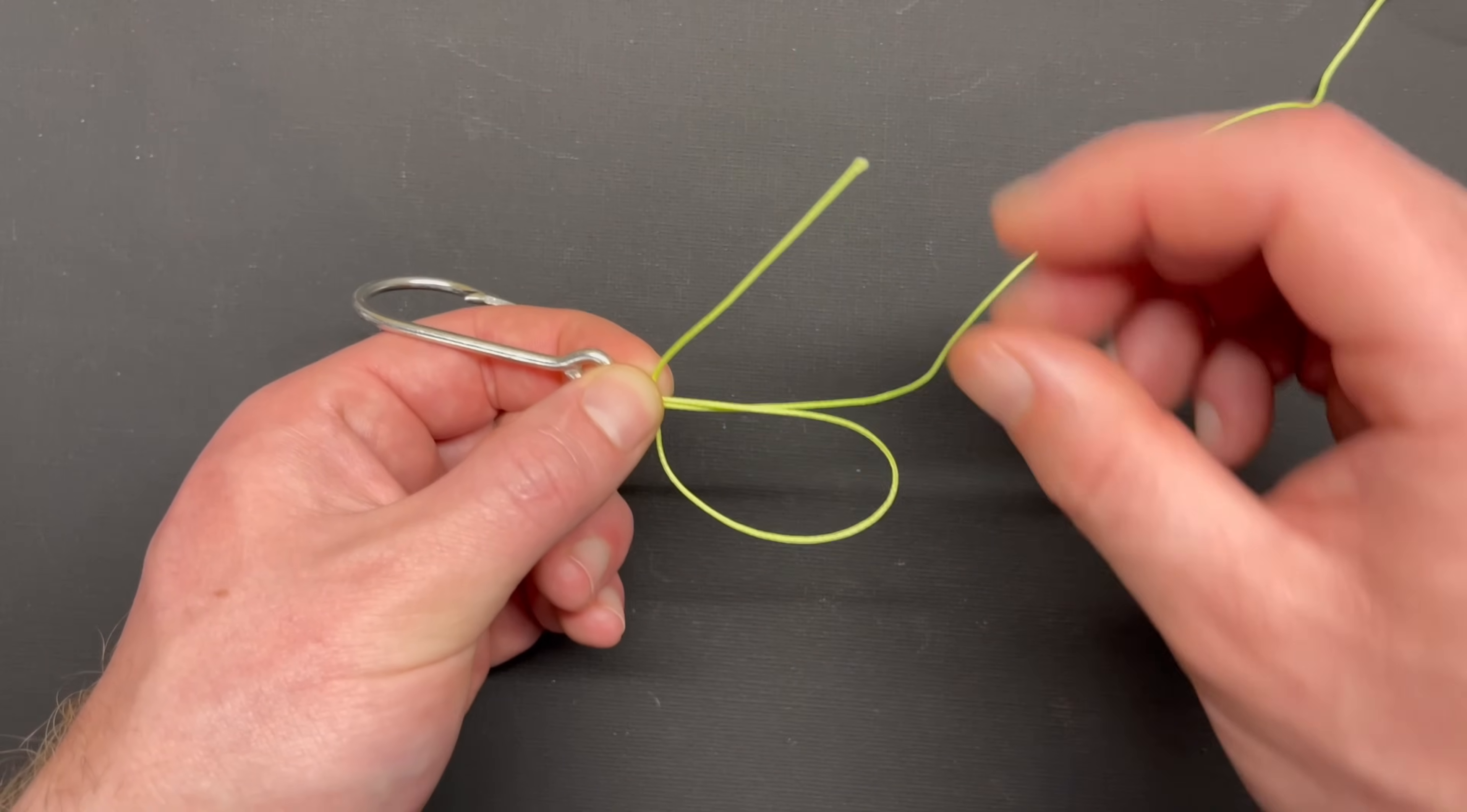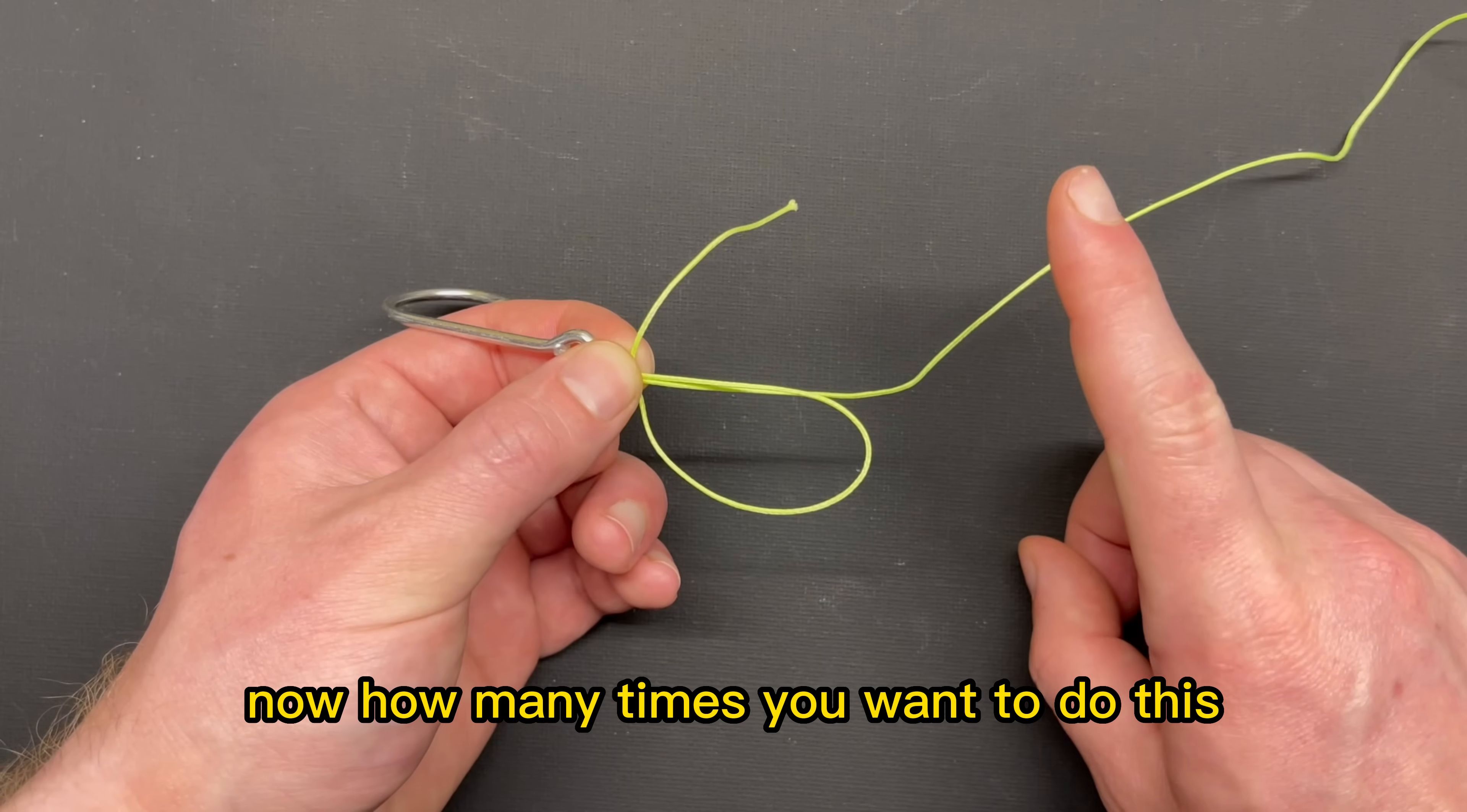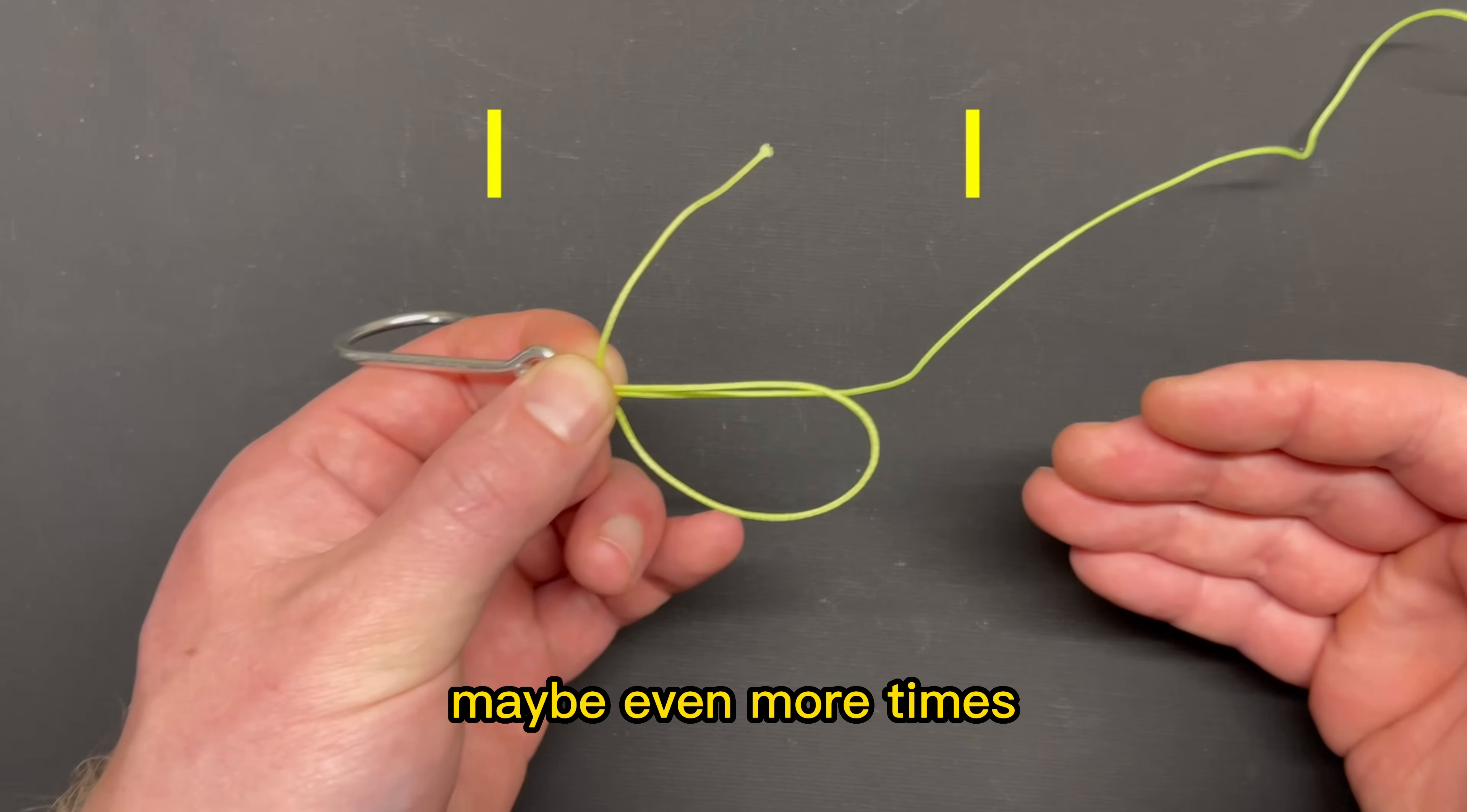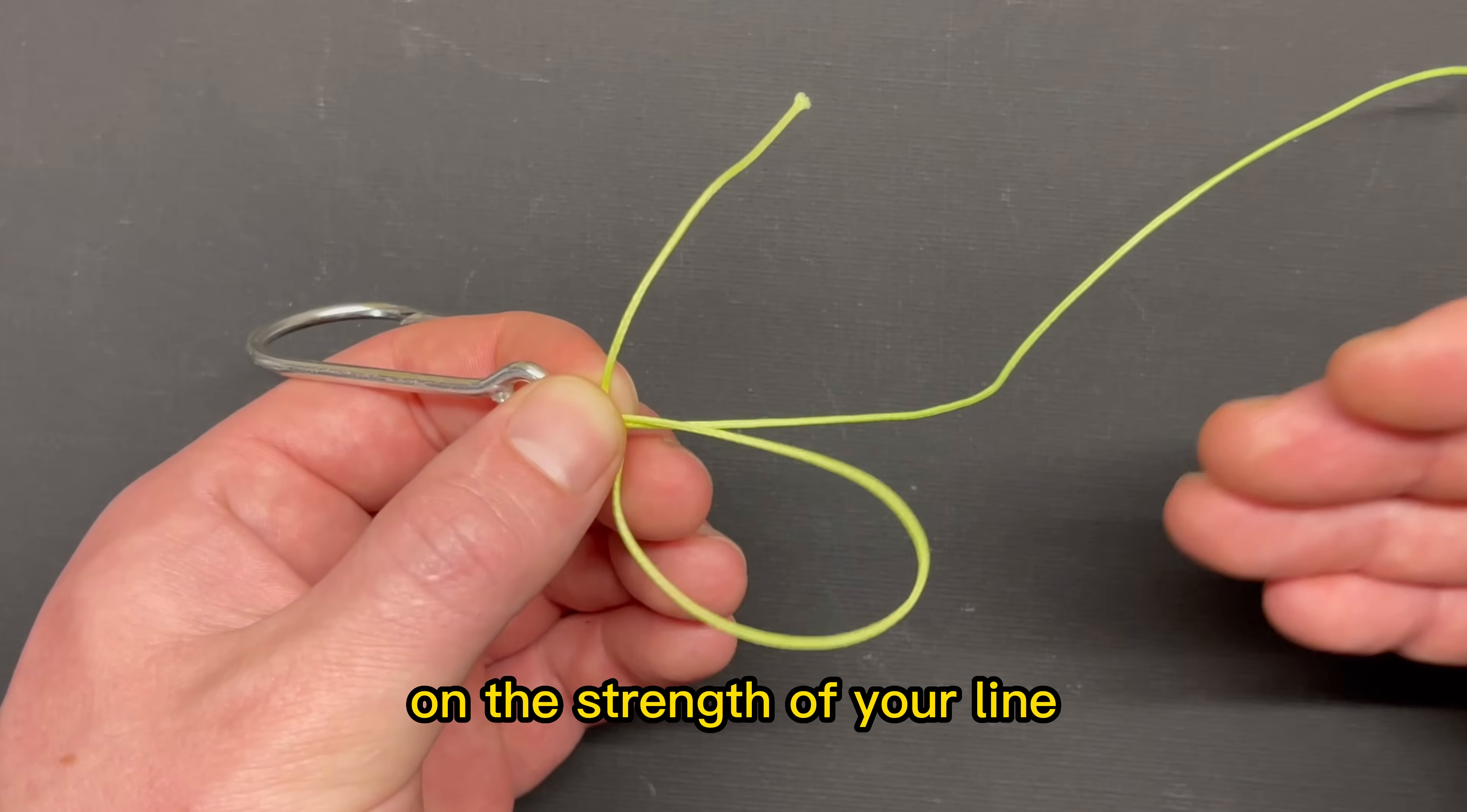Now what you're going to do is take your tag end and run it around and through this loop a number of times. How many times you want to do this depends on the strength of line that you're using. If it's really light line, you might want to run it six to eight, maybe even more times. If it's very heavy line, maybe three to four times or four to six times.